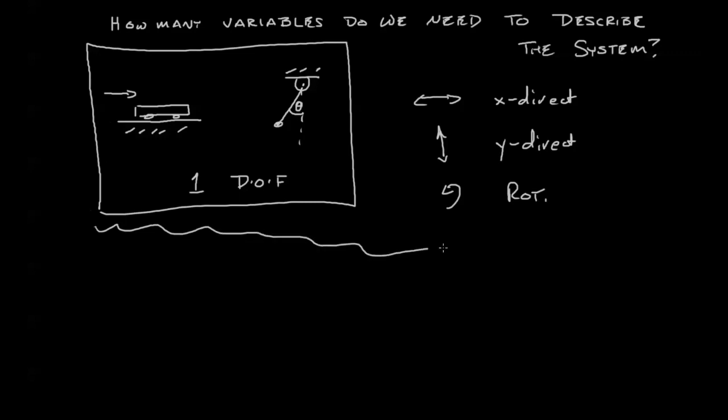Now let's look at some examples. First, we could imagine that we have a particle on some plane. Since it's a particle, we're going to ignore any rotation. However, it can move horizontally and it can move vertically. So therefore we have two degrees of freedom.